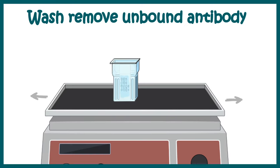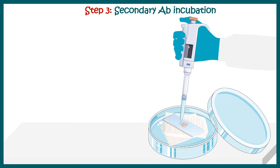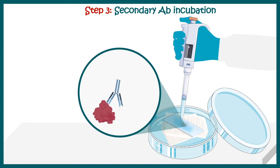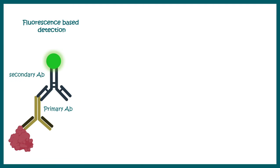After primary antibody incubation, unbound antibodies are removed by washing several times. Next, secondary antibody incubation is performed, where fluorophore-conjugated secondary antibodies are added. These fluorophore-conjugated antibodies detect the Fc region of the primary antibody. Since these fluorophores are light sensitive, this step is preferred to be done in a dark setting.